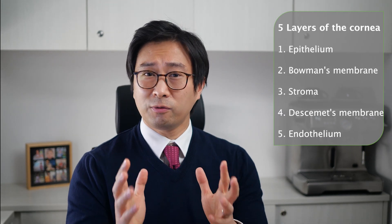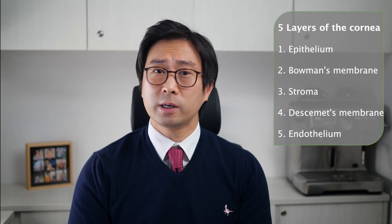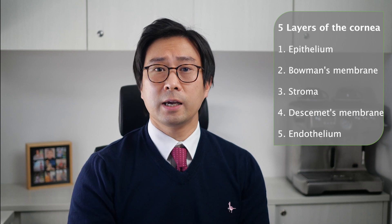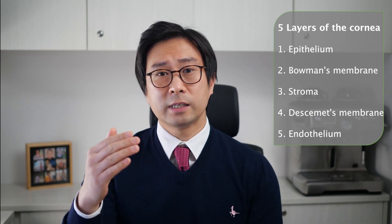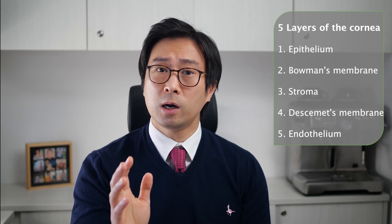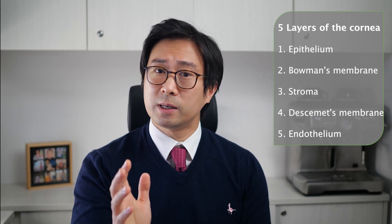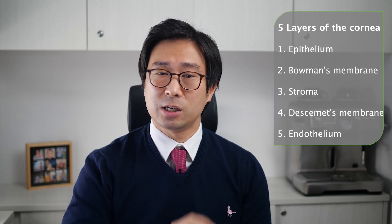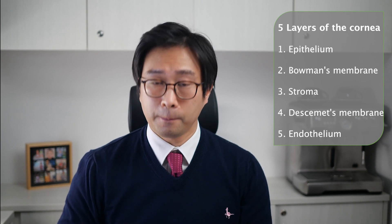There are five layers in the cornea. Starting from the outside in: the epithelium, the Bowman's membrane, the stroma, Descemet's membrane, and finally the endothelium.